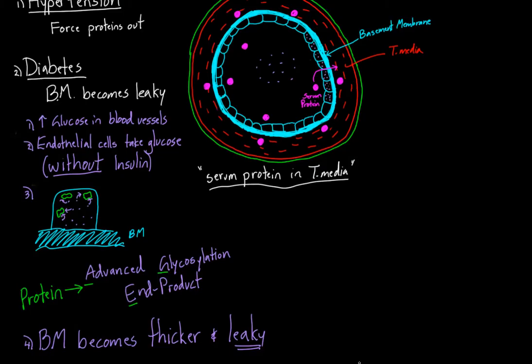We left off talking about arteriolosclerosis, specifically hyaline arteriolosclerosis, which is where you see pink, glassy material in the tunica media. We talked about the two major diseases where you see it getting there.